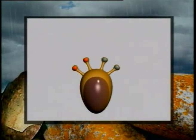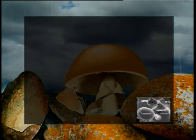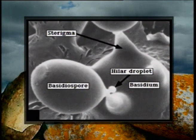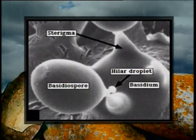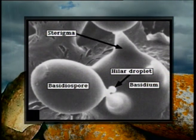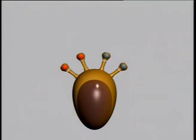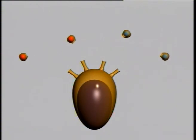The spores remain within the basidium until physically dispersed. Once the basidiospores are mature, a liquid droplet known as the hillar droplet appears at the hillar junction, lifting the basidiospore at its top. This liquid drop enlarges up to one-fifth of the size of the spore. This enlargement creates a tension, and with this the spores are shot away from the sterigmata in rapid succession.